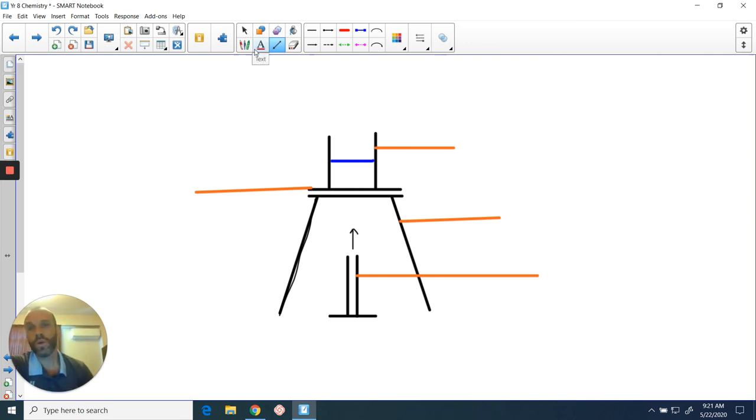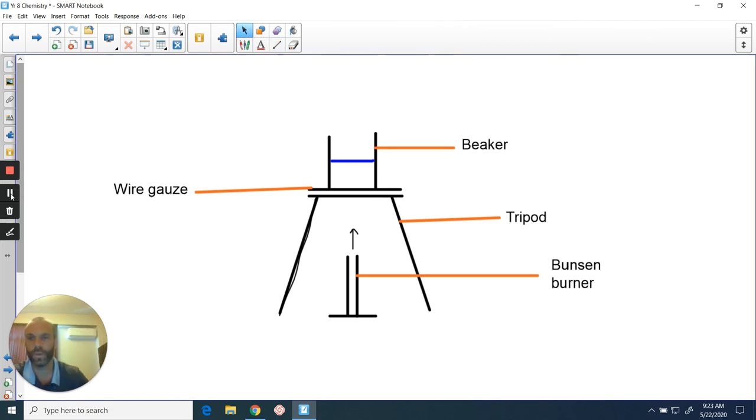We can write our labels in now. So there we have it, that's our final diagram that shows all the apparatus in the correct places. If someone wanted to copy this experiment, they'd know how to set it up, and with all the labels drawn correctly and with the correct name for the apparatus. Hopefully now you know how to draw in the scientific way, and remember this is going to be something that you're going to be doing a lot next year.